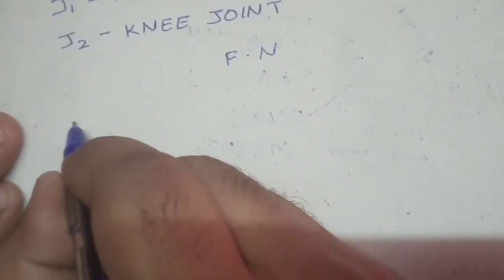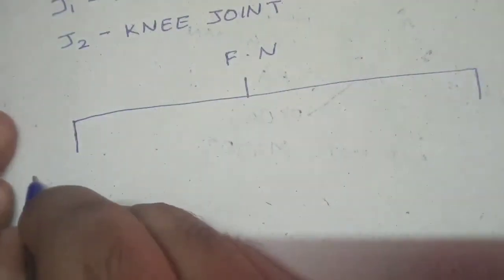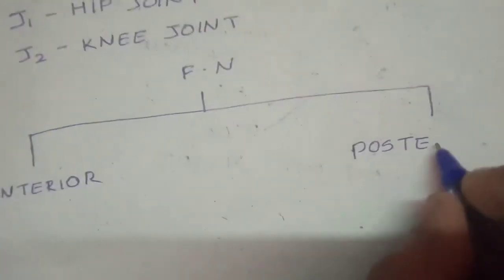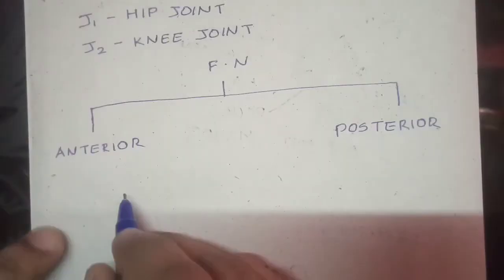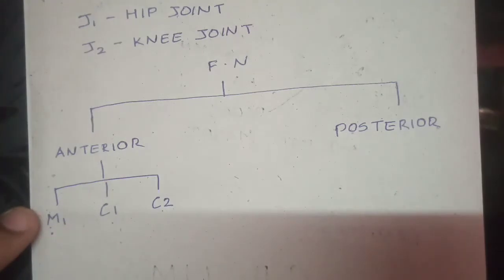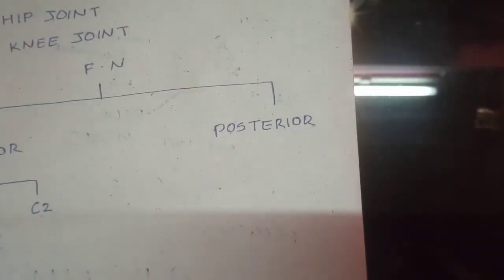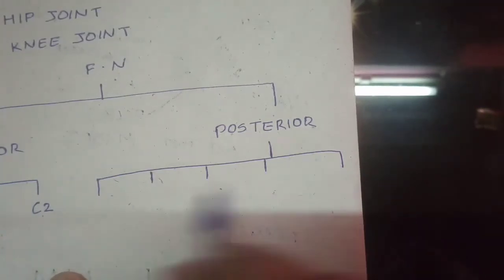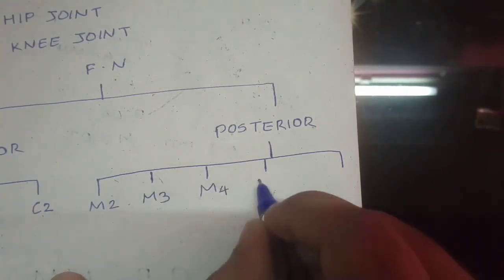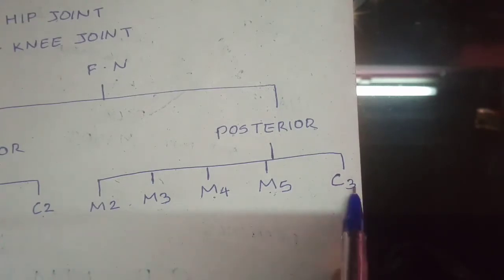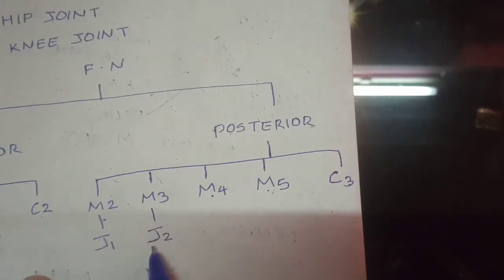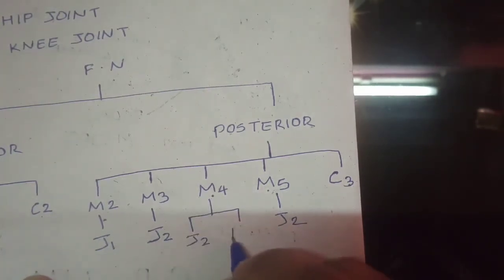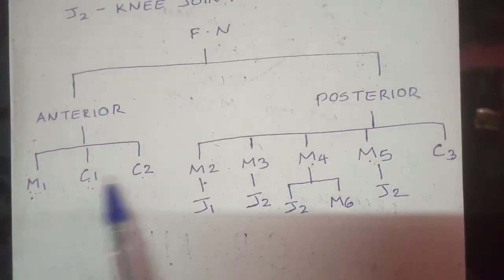The femoral nerve divides into anterior and posterior divisions. From the anterior division, it gives M1, C1, and C2. From the posterior division, it gives five branches: M2, M3, M4, M5, and C3. Additionally, from M2 it gives J1; from M3 it gives J2; from M5 it gives J2; and from M4 it gives two branches — J2 and M6.